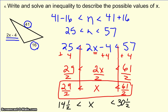So basically, anything that's between 14 and a half and 30 and a half could replace x, and we would have a triangle.